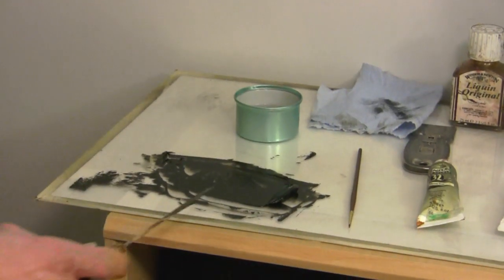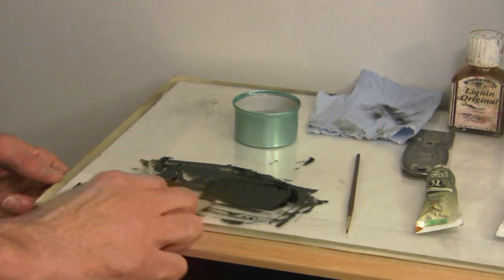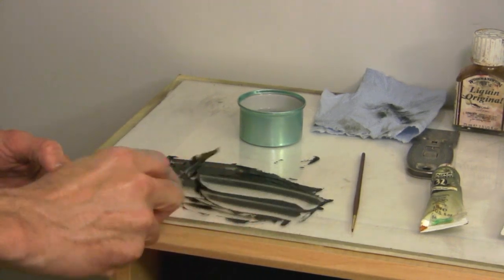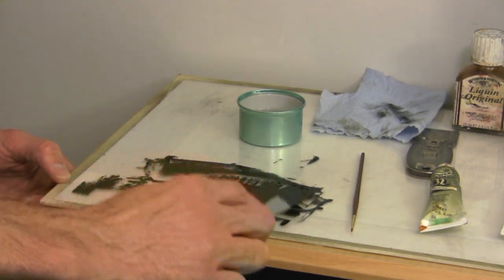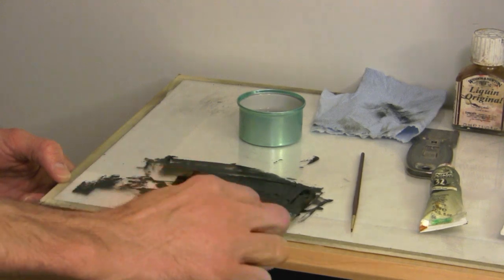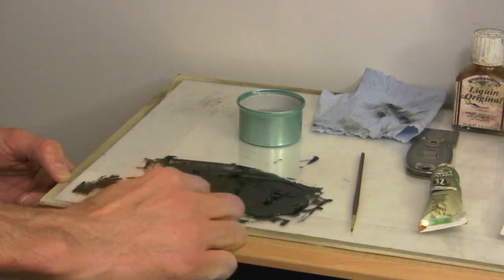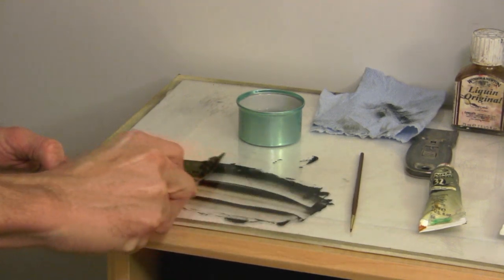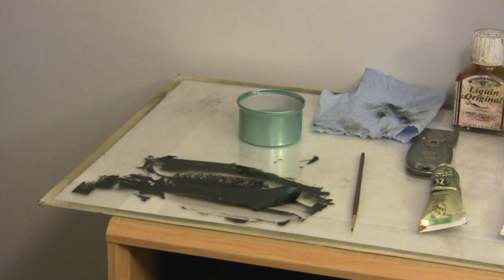Once you get it mixed together really well and worked through to get an idea of what the color is going to turn out to be, what I like to do is just kind of spread it thin across the palette. And you'll see, especially here with my green and my gray, you'll see those subtle tones kind of coming through. And that's what I'm going for.